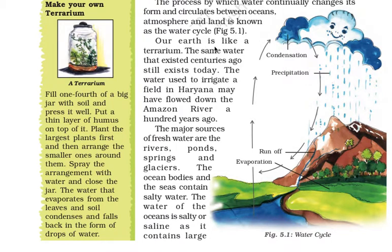Our earth is like a terrarium. The same water that existed centuries ago still exists today. The water used to irrigate a field in Haryana may have flowed down the Amazon River a hundred years ago.